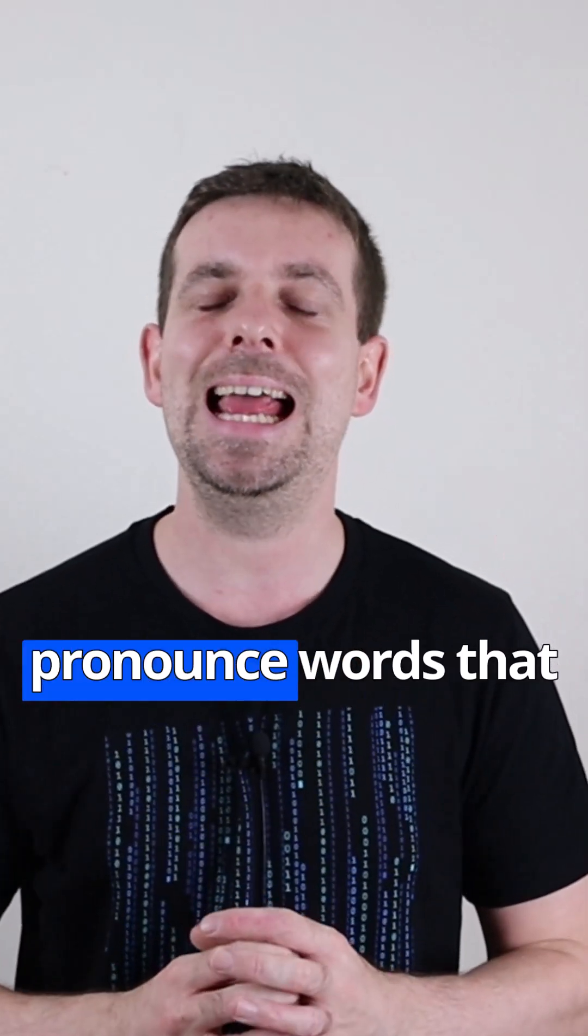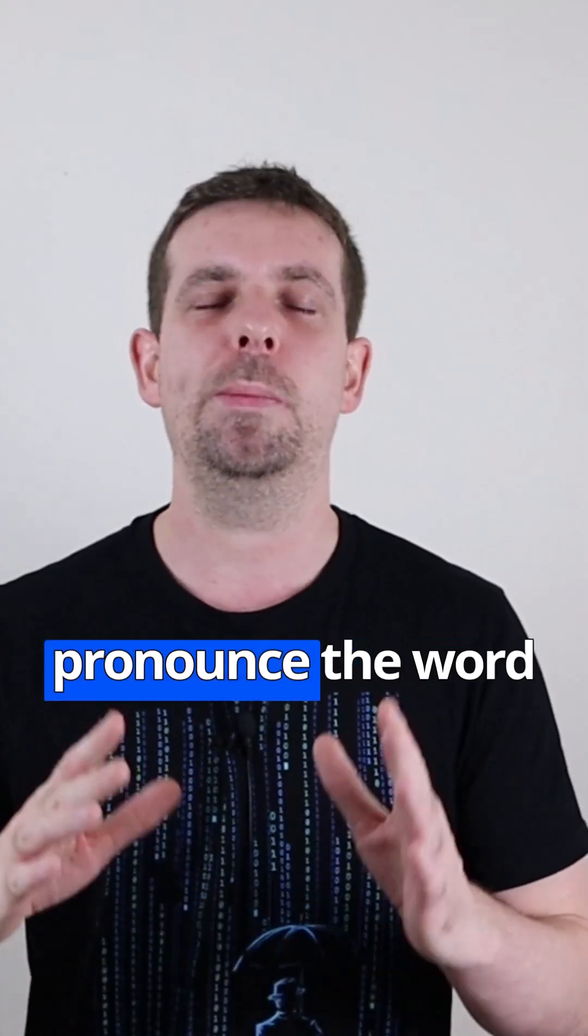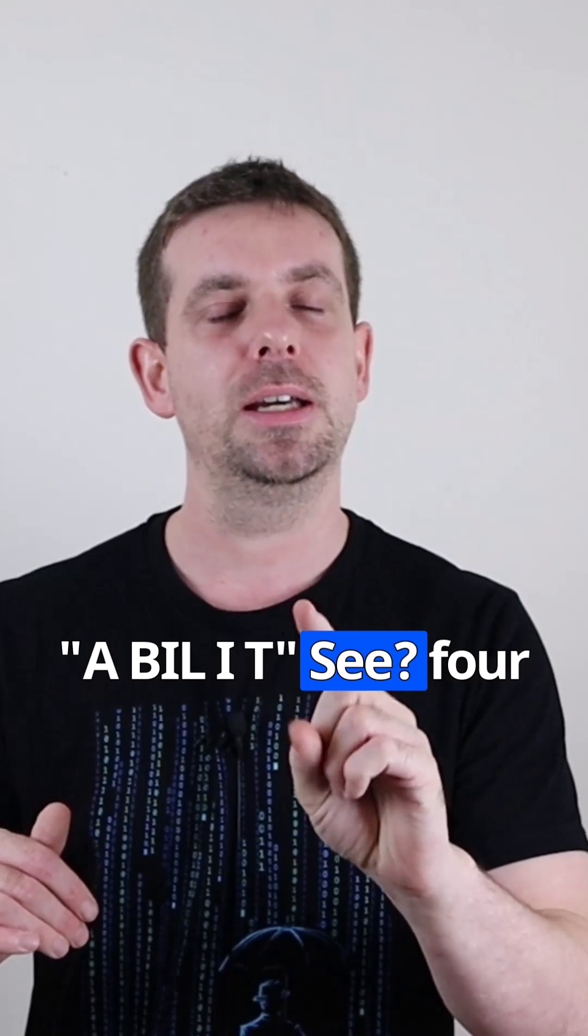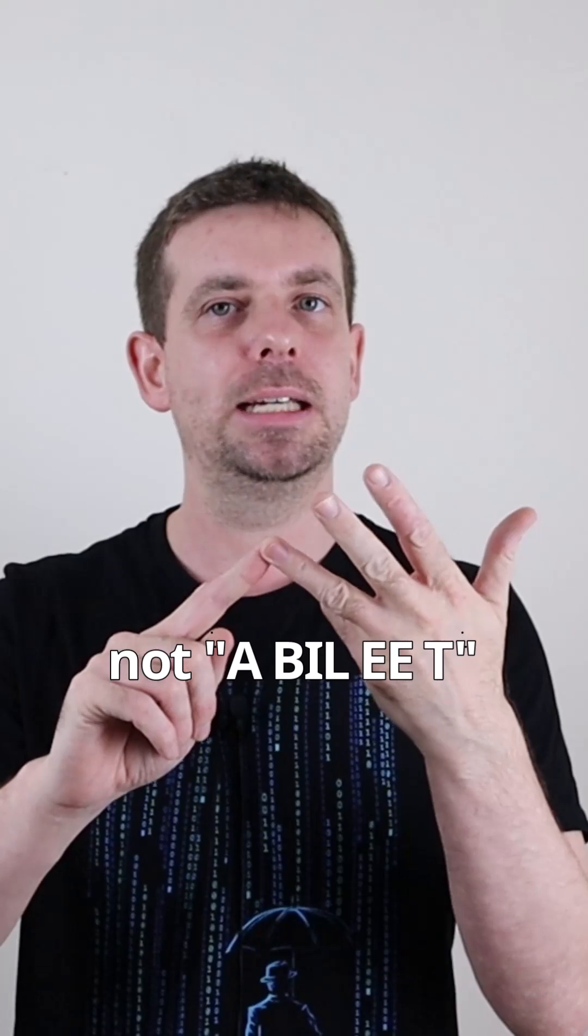How do you pronounce words that end with ability in IT English? So we pronounce the word a-bill-a-ty. See? Four syllables. A-bill-a-ty. It's not a-bill-i-ty. A-bill-a-ty.